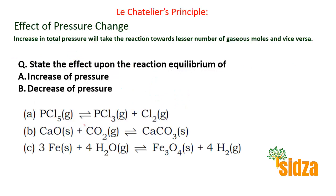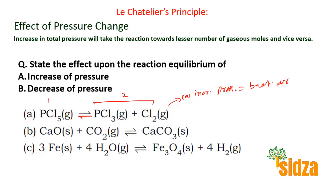Let's take one more example. PCl₅ decomposes to PCl₃ and chlorine. We have one mole of gaseous reactant and two gaseous moles on the product side. If you increase the pressure, the equilibrium will react to decrease the pressure, which means it will shift in the backward direction — because you have fewer gaseous moles in the backward direction: two moles of gas combine to form one. So increasing the pressure shifts equilibrium backward. Conversely, if you decrease the pressure, the equilibrium will try to increase the pressure by shifting in the forward direction, where you have more gaseous moles.